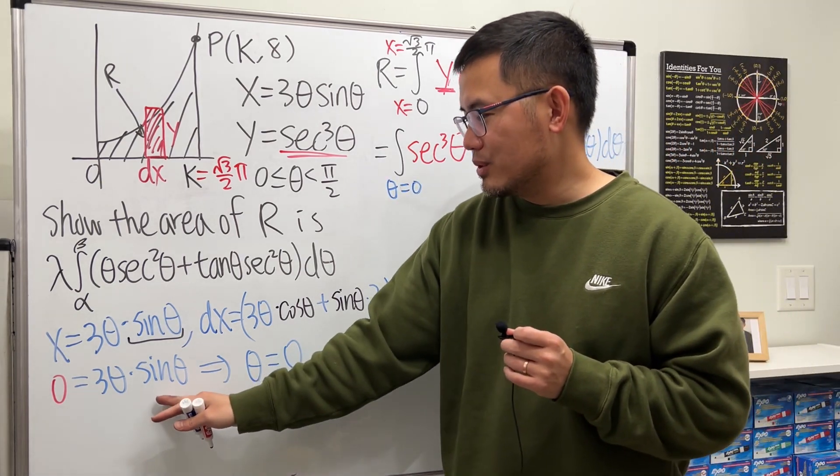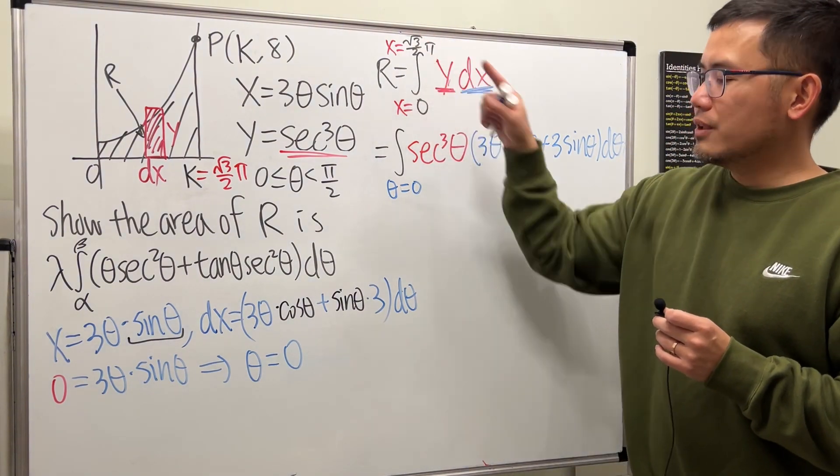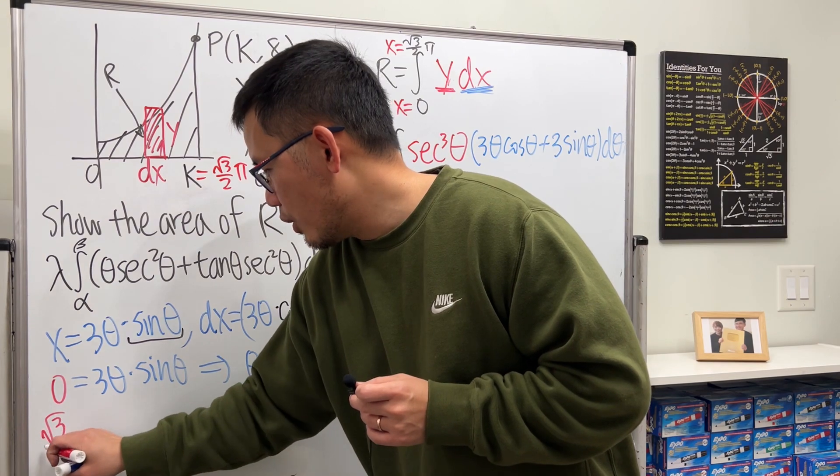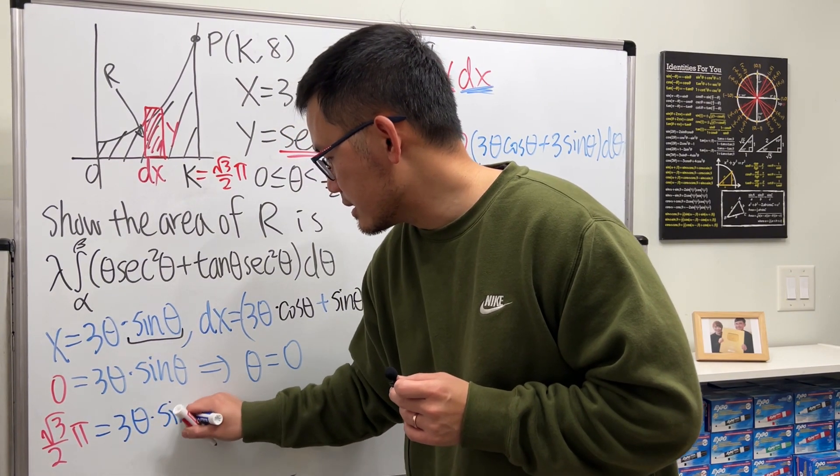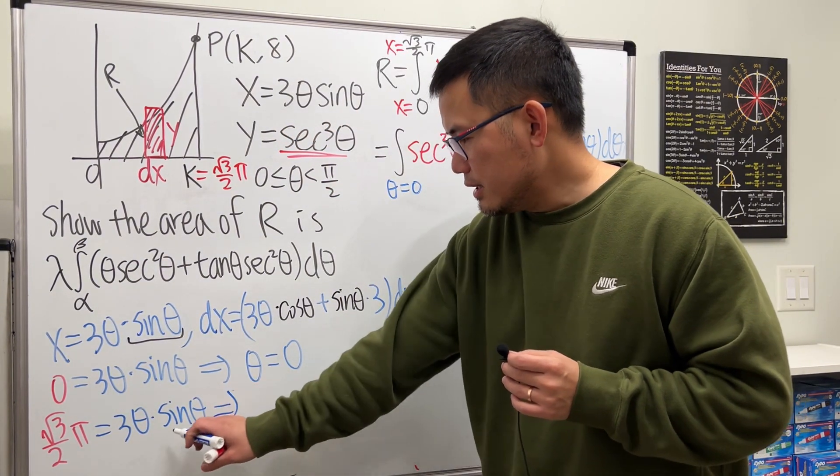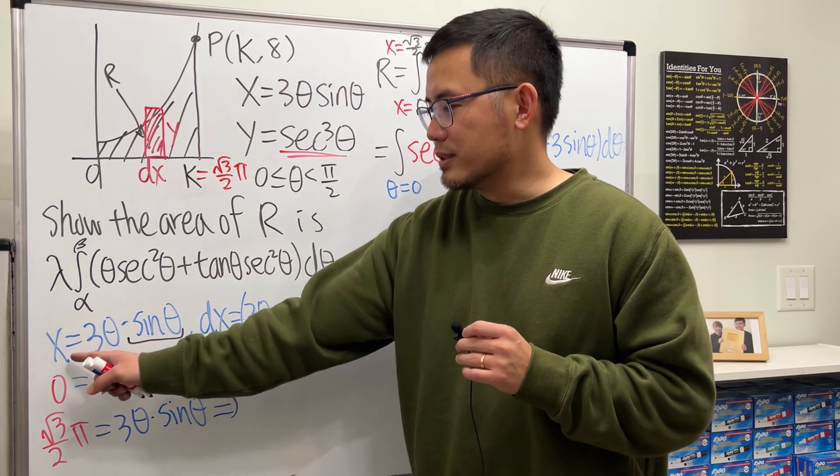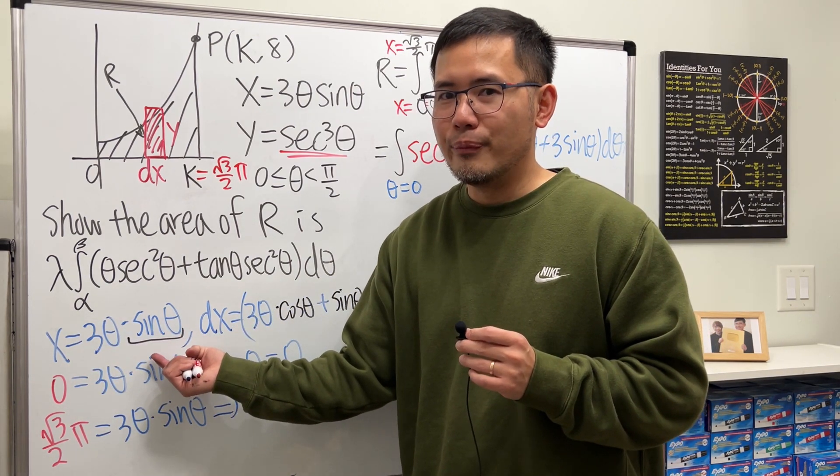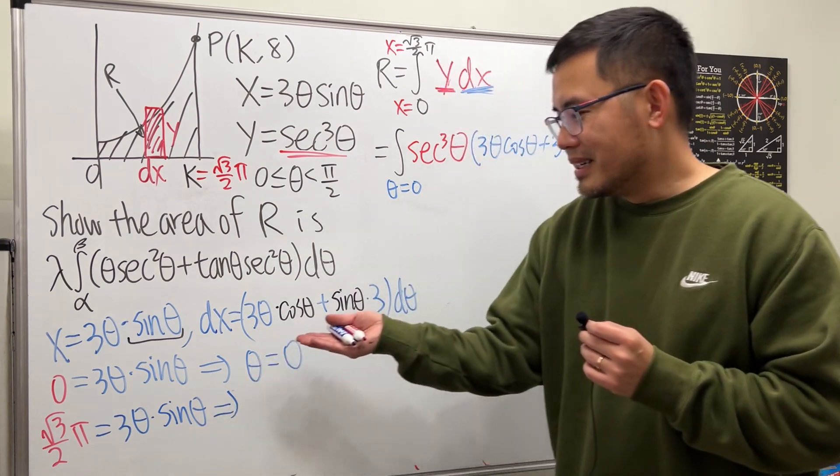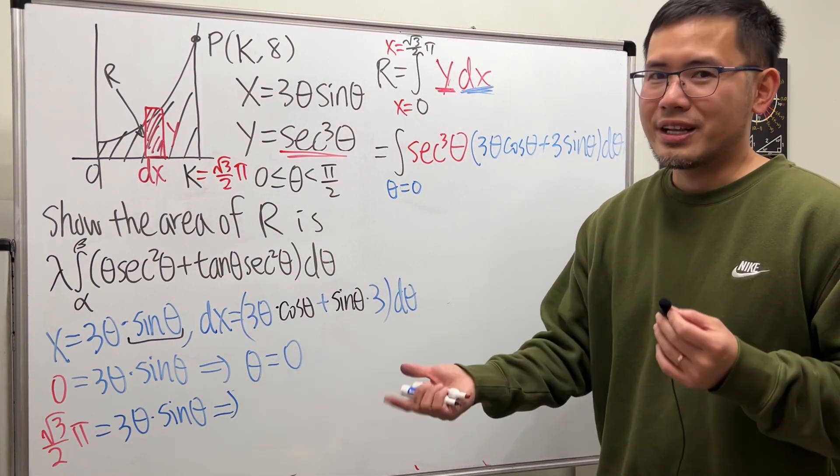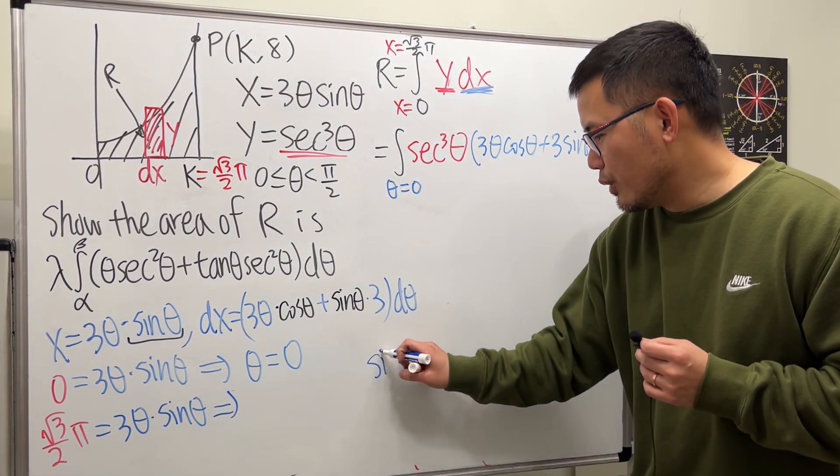Now put this for the x: √3/2 π equals 3θ sinθ. This equation, in my opinion, is not a fair equation because 3θ sinθ equals x - we don't have a way to isolate theta. So now we have 3θ sinθ equals that number. How do we solve for theta? Well, the way I came up with is just kind of recognize some special numbers. Sinθ and √3/2, do we recognize that?